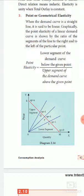In diagram 2.14, the x-axis shows quantity demanded and the y-axis shows price. You can draw the downward-sloping demand curve from left to right. The demand curve is divided into five parts. The diagram will be explained in the next video. This completes the introduction to the point or geometrical method.